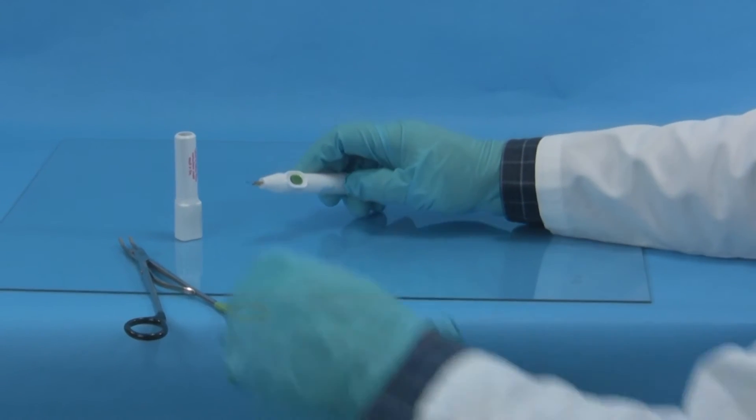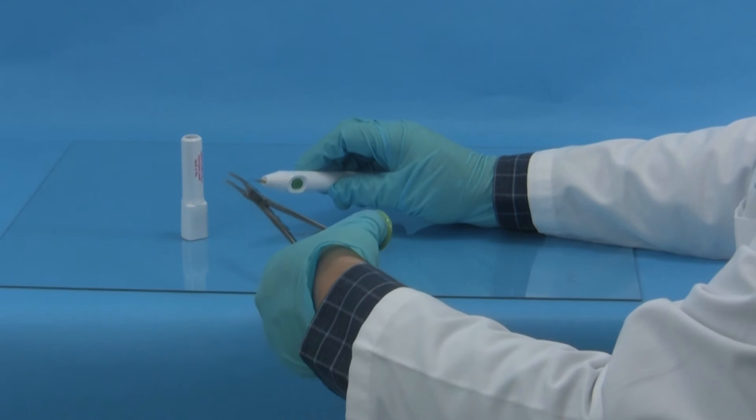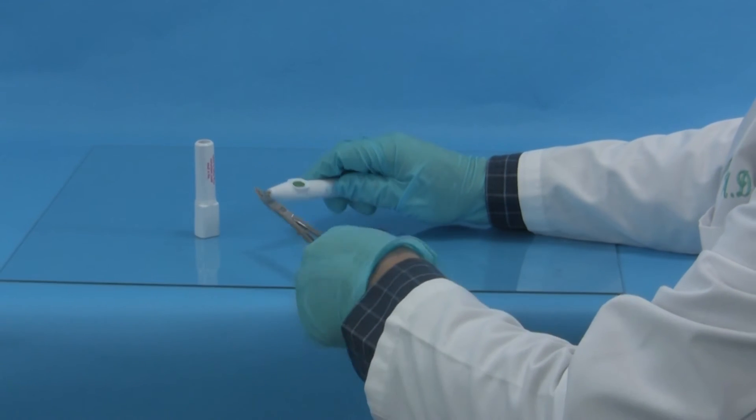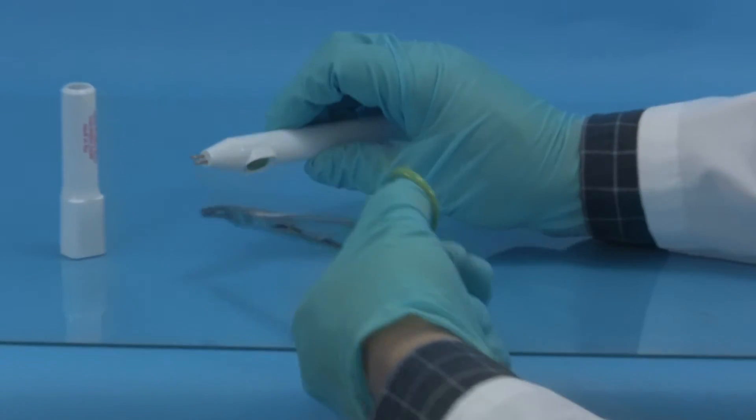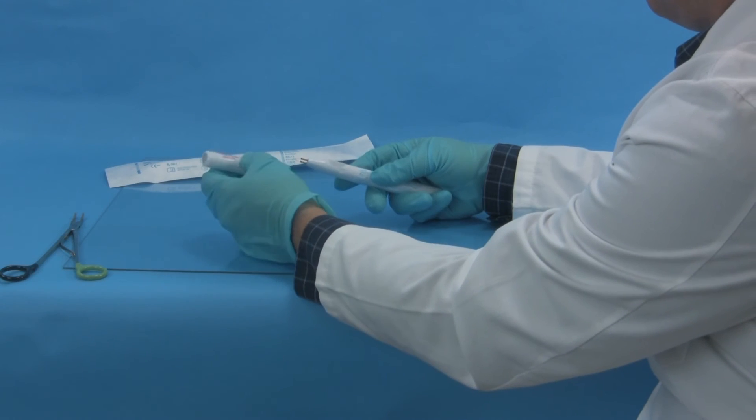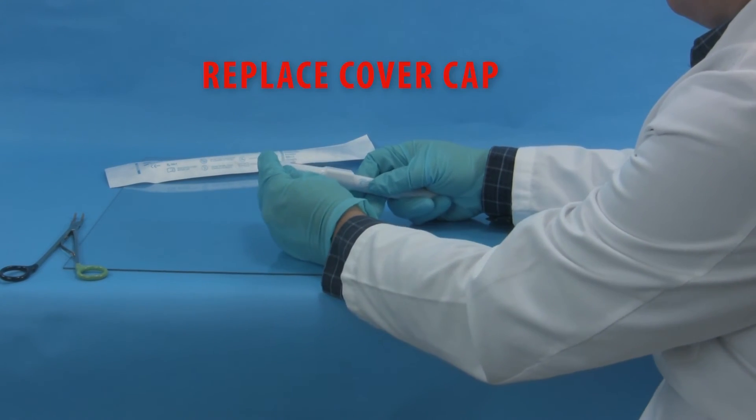To properly dispose of the cautery, use hemostats to break off the tip and replace the cover cap. It is important to replace the cover cap.